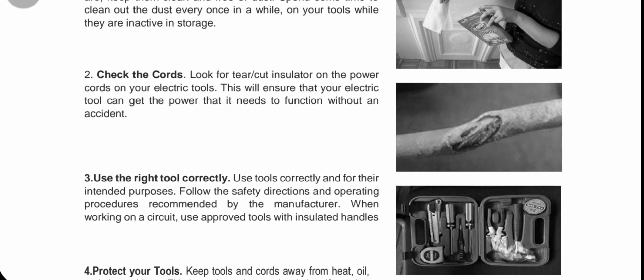Number two: check the cord. For our electrical power tools, always look for tears or cuts in the insulation on the power cord. This ensures your electric tool can get the power it needs to function without accidents. If we encounter exposed wires, we can use electrical tape or shrink tubing to secure them, greatly reducing the chance of accidents.